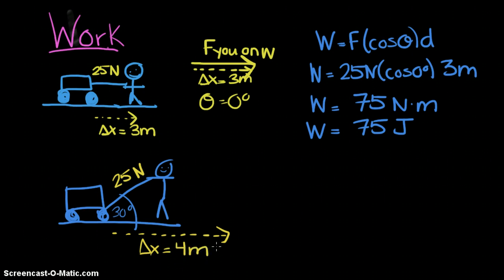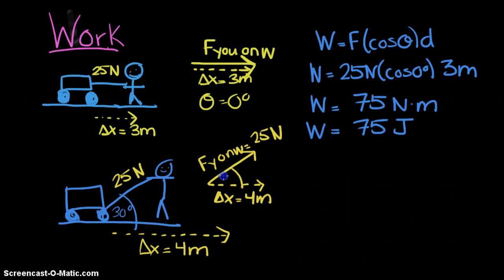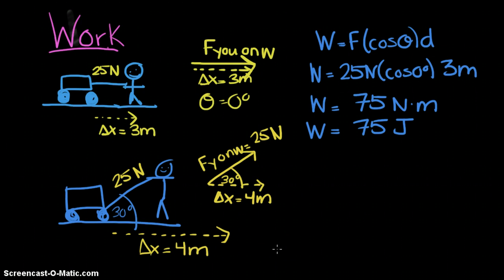Drawing the force vector of you on the wagon at 25 Newtons, and the displacement vector along the road, the angle between them is 30 degrees. This helps explain why cosine theta exists in the formula — the full 25 Newton force isn't responsible for the displacement in the x direction; it's the x-component of the force that is.